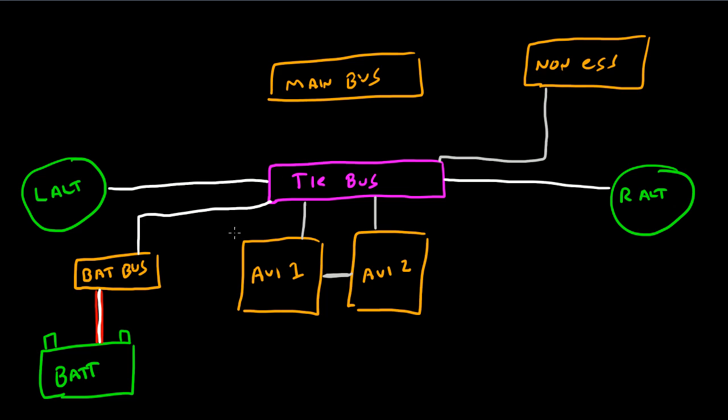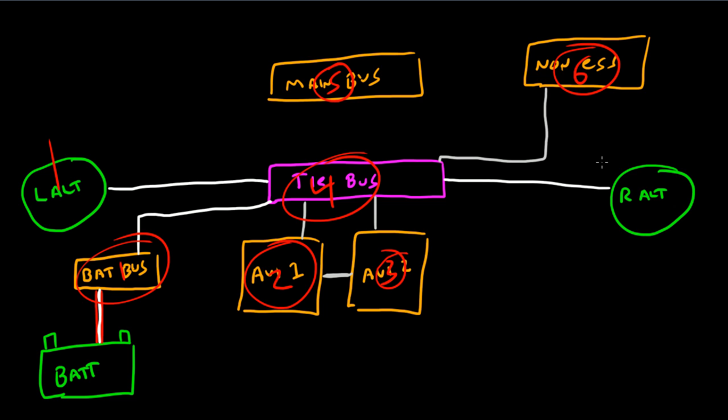So now we've got a total of six buses, and that's all that are actually in the airplane. We've got the battery bus, number one, avionics one and two, two and three, the TIE bus itself, which is number four, main bus, which is five, and the non-essential bus, which is six. We've got two alternators, and we've got a battery, so three sources of electrical energy.